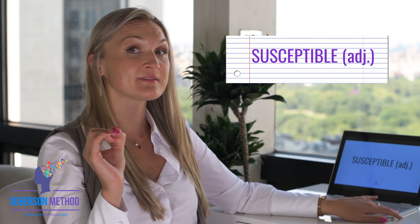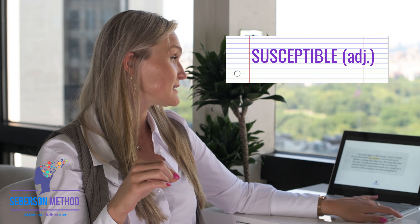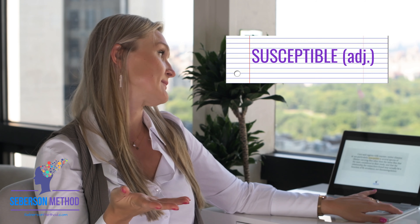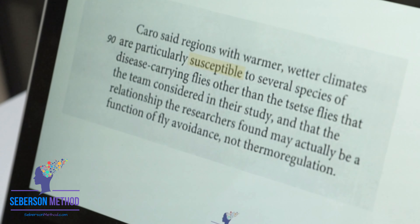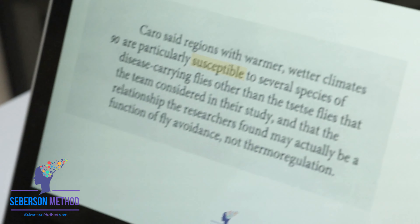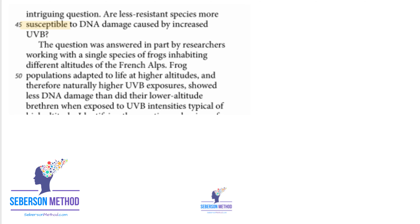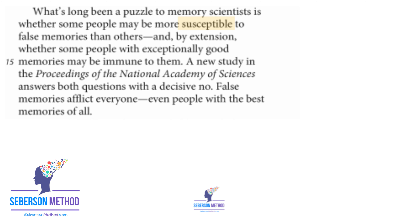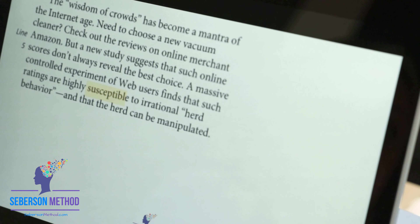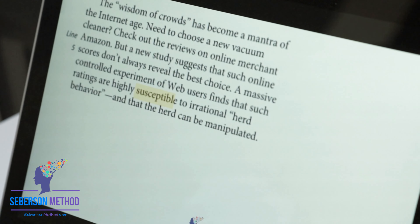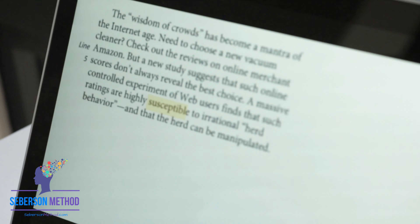Susceptible is a very cool adjective meaning you are likely to be influenced by something. Examples: 'regions with warmer, wetter climates are particularly susceptible to several species,' 'susceptible to DNA damage,' 'more susceptible to false memories,' 'susceptible to mite infestations,' 'susceptible to irrational herd behavior.' This word appears mostly in social science and natural science passages.